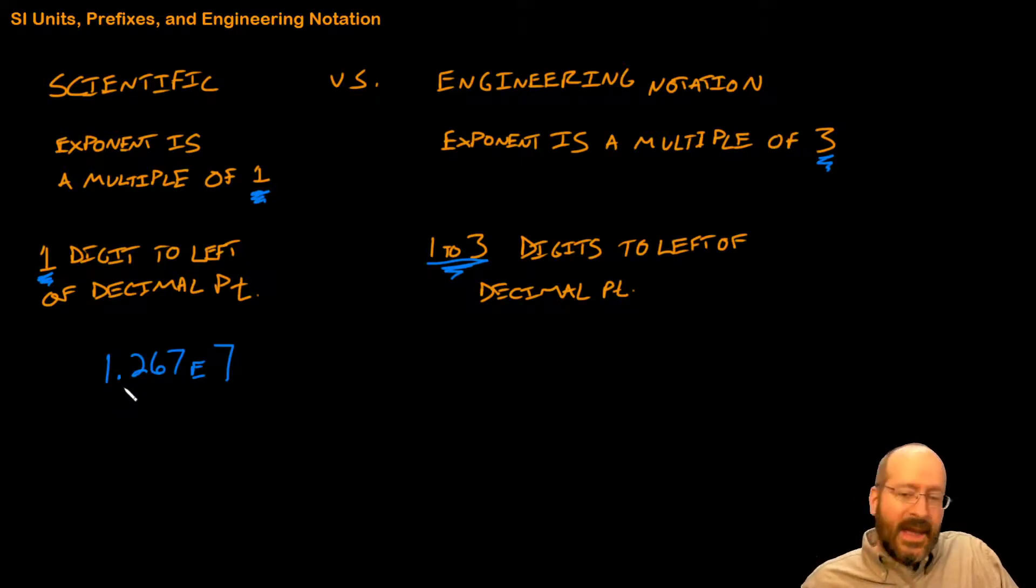So that 1.267E7 has one digit to the left of the decimal point. But the exponent is not a multiple of 3, so we have to change it. So we either have to make this 6, which would be nearby, or we could bump it up and make it 9. So we've got to move the decimal place. If we move it to the right by one digit, we'll get 12.67E6.